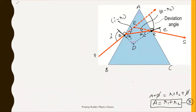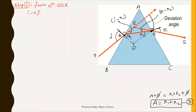Coming to step three, let us choose one more triangle — triangle QER, the smaller upper triangle. The sum of its three angles equals 180 degrees. Those three angles are i minus r1, plus e minus r2, plus the angle at E, which gives us the equation: (i minus r1) plus (e minus r2) plus E equals 180 degrees.